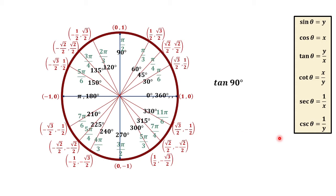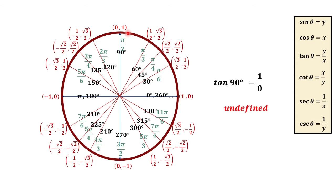For tangent 90 degrees, tangent is y over x. y is 1 and x is 0, so we have 1 over 0. And this would give us undefined.